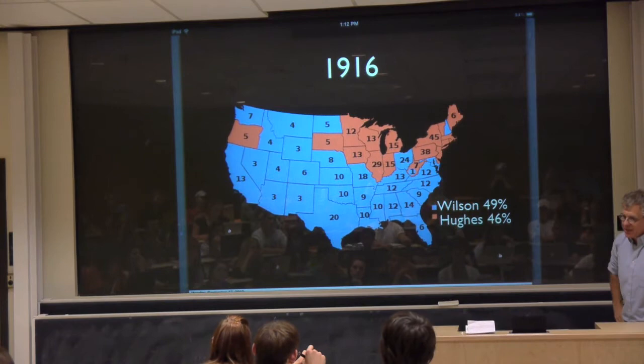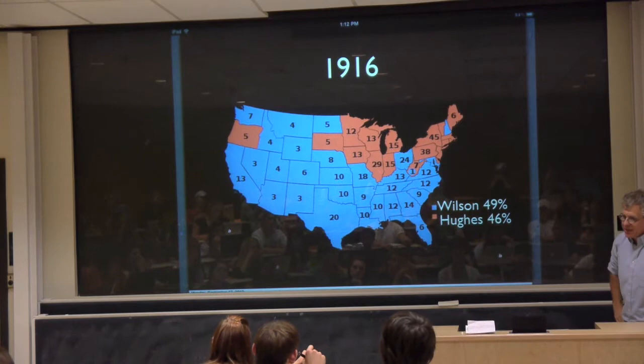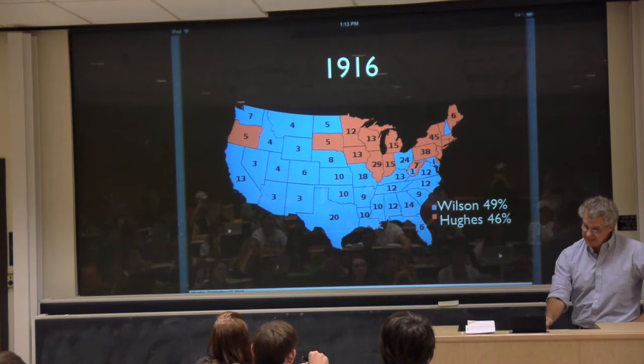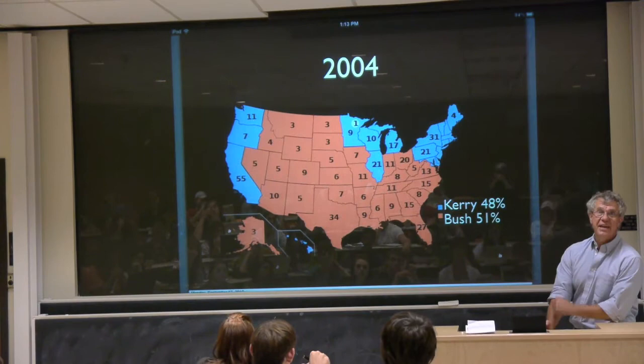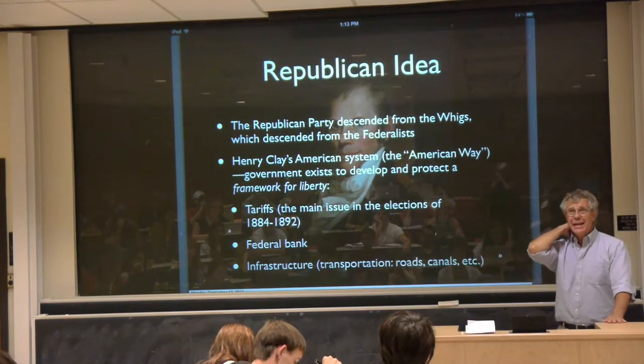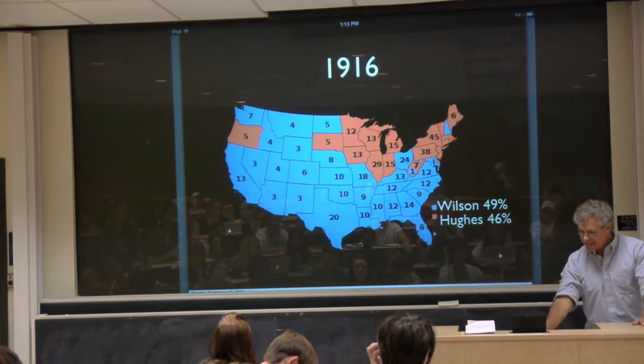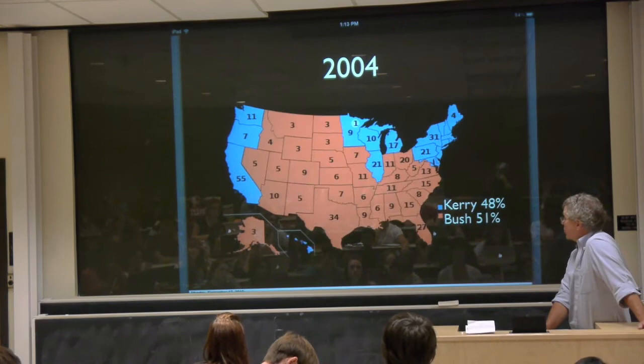In 1916, Wilson won re-election against Hughes — and if you compare that map with 2004, they're really similar, but the colors have switched places. That's behind the central question here: what on earth happened between 1916, when the L was a blue Democratic L, and 2004, when it became a red Republican L? How did the parties switch places?